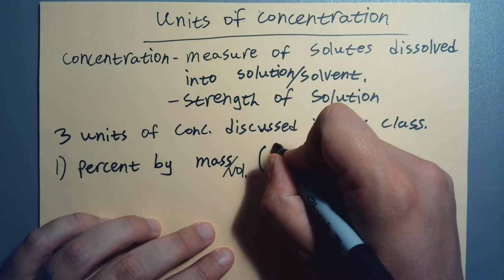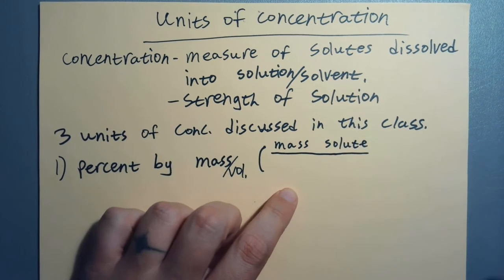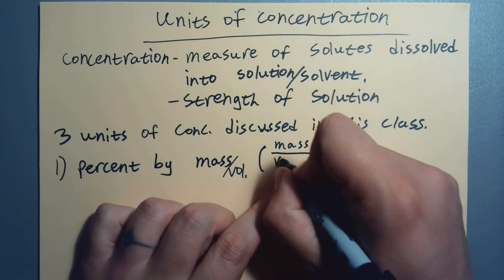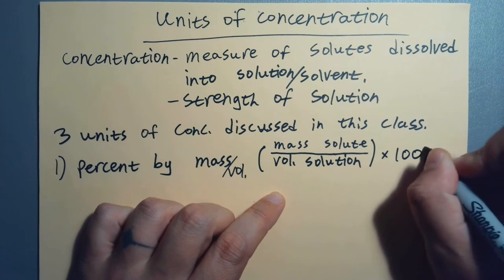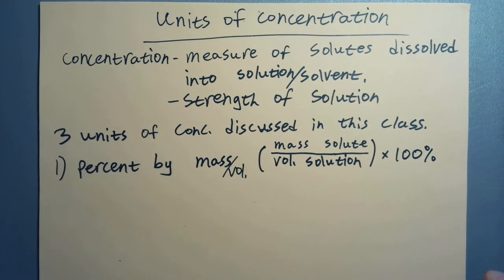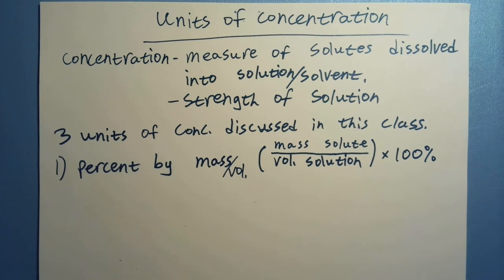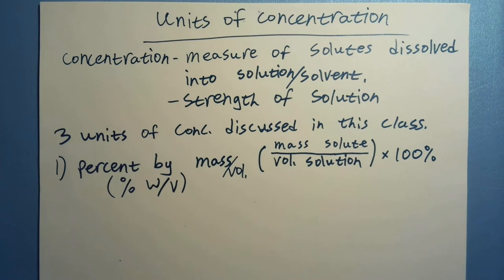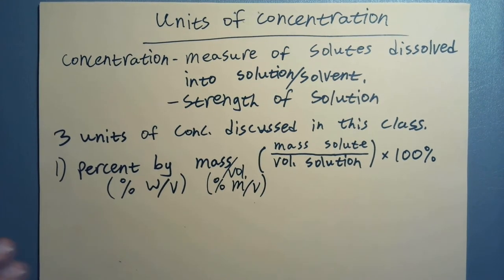And then we're going to multiply by 100%. That would be percent mass over volume. Sometimes it's just mass over volume. You see grams per milliliter, milligrams per milliliter, something like that. It might also be seen as percent weight over volume. There's different notations for it. On the Moodle page, you'll see percent m over v.